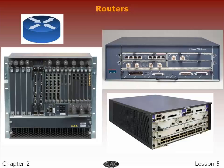Once a match is found, the packet is encapsulated in the layer 2 data link frame for that outgoing interface. The sending side encapsulates the packet and the receiving side de-encapsulates it. A router does not look into the actual data contents that the packet carries, but only at the layer 3 addresses to make a forwarding decision, plus optionally other information in the header for hints such as QoS, which stands for quality of service.